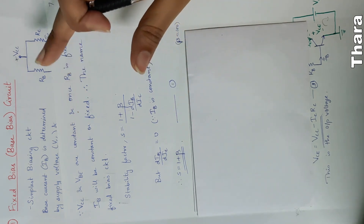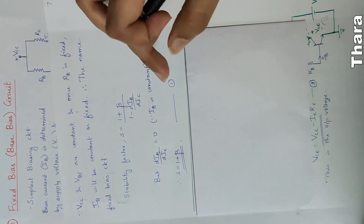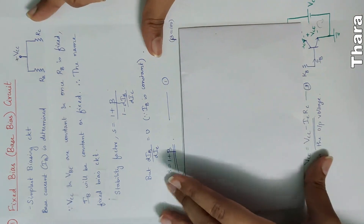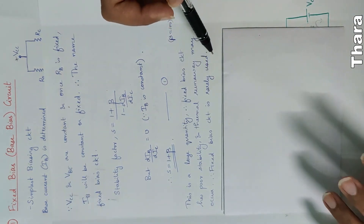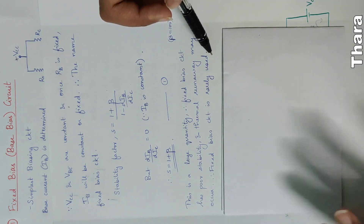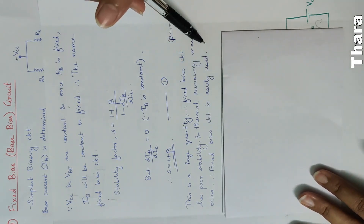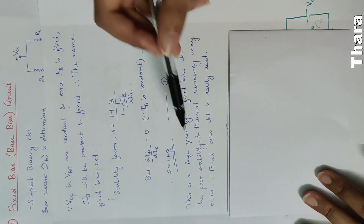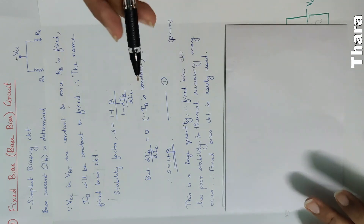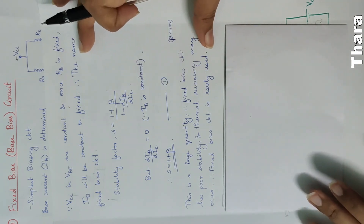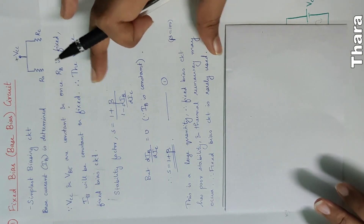As we increase beta, the stability factor increases — meaning stability is small. We rarely use the fixed bias circuit. If we use the fixed bias circuit, it has poor stability and there is a thermal runaway chance.